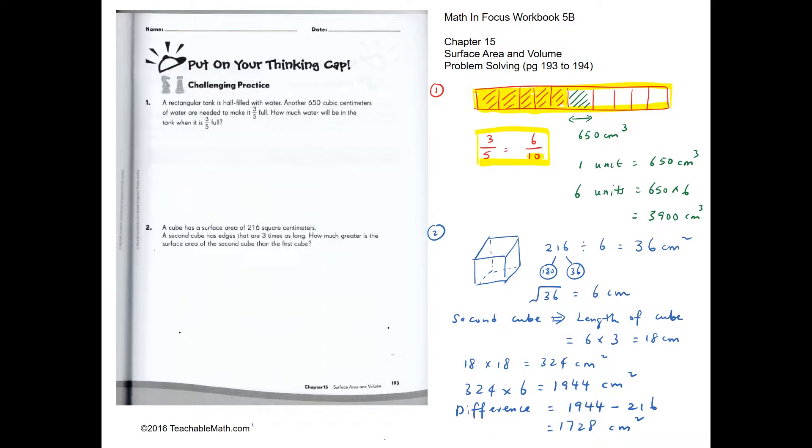What is three-fifths if we change it to a denominator of ten? It will be six-tenths. So in order to make it six-tenths full, we have to add an additional 650 cm cubed.